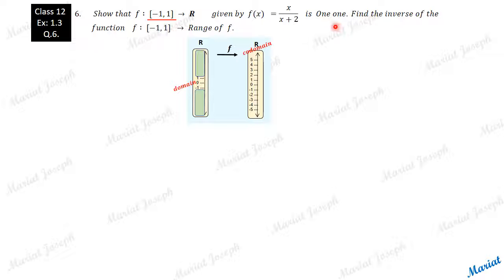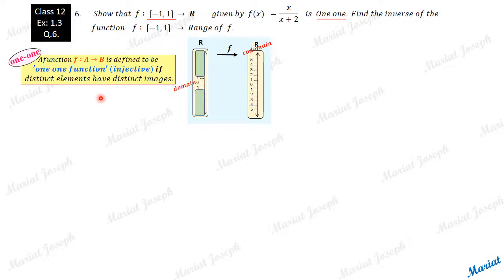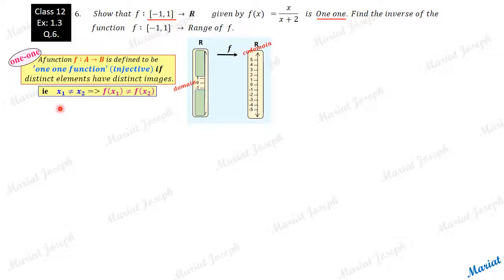Now we need to prove that it is a 1-1 function. First, let's refer to the definition. What is a 1-1 function? A function f from set A to set B is called a 1-1 function, or injective function, if distinct elements have distinct images. That means x1 not equal to x2 implies f(x1) not equal to f(x2). If there are two elements x1 and x2, distinct and unequal, then their respective images will also be unequal.